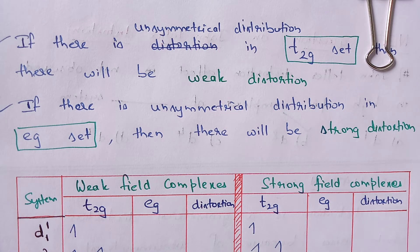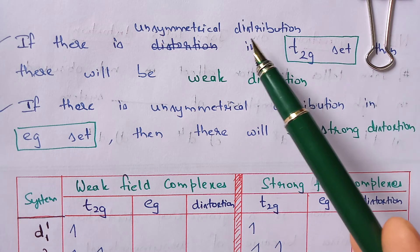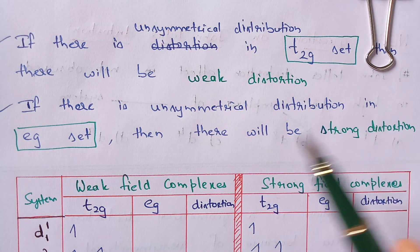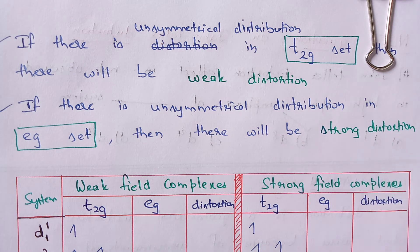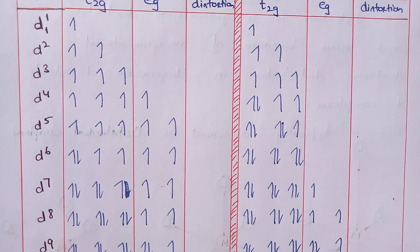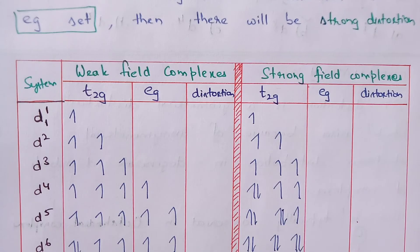Because of unsymmetrical distribution of electrons, distortion will take place. If that unsymmetrical distribution is present in the T2G set, there will be weak distortion — very little distortion. If the unsymmetrical distribution is present in the EG set, then there will be strong distortion. So T2G gives weak distortion and EG gives strong distortion. I have drawn a table showing the electronic distribution in both weak field and strong field complexes.